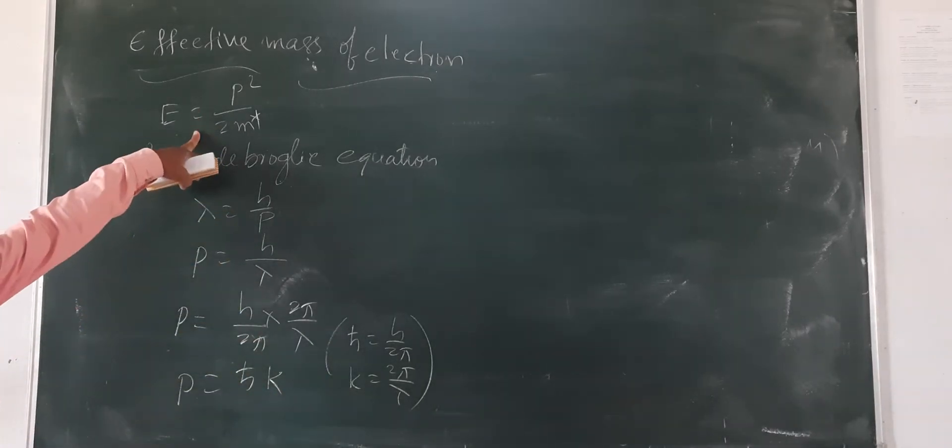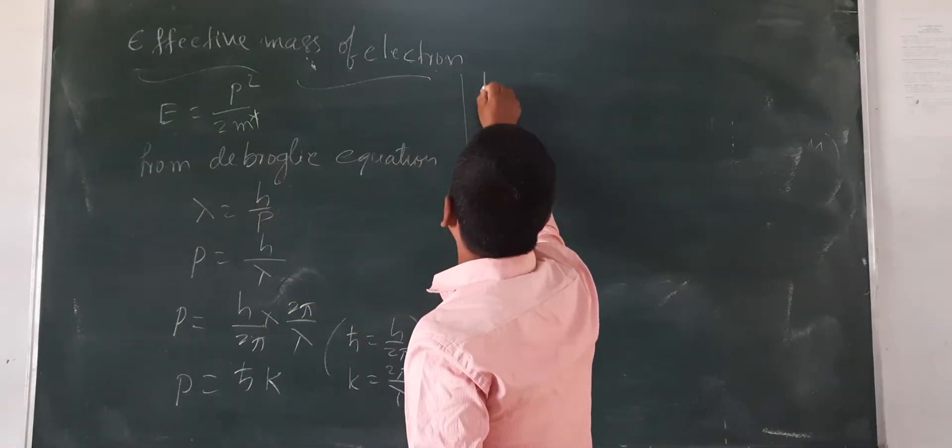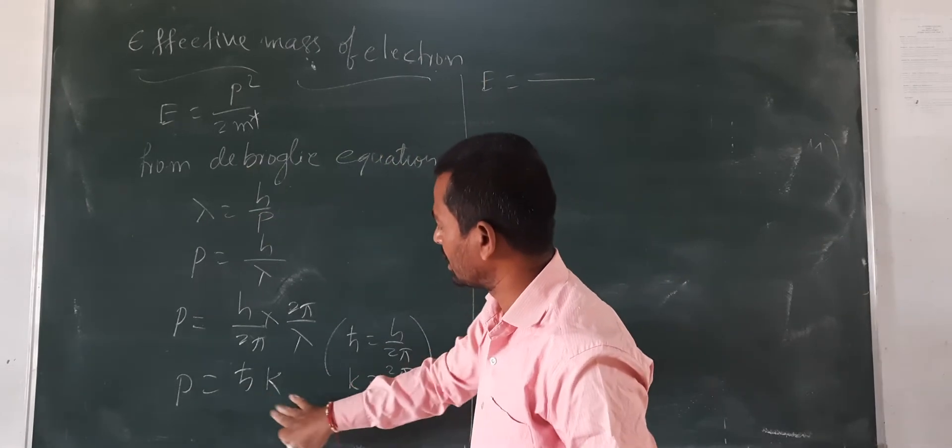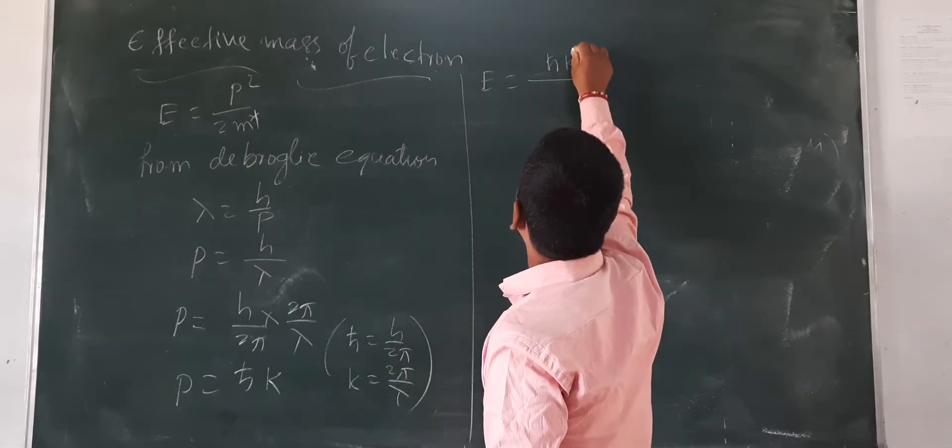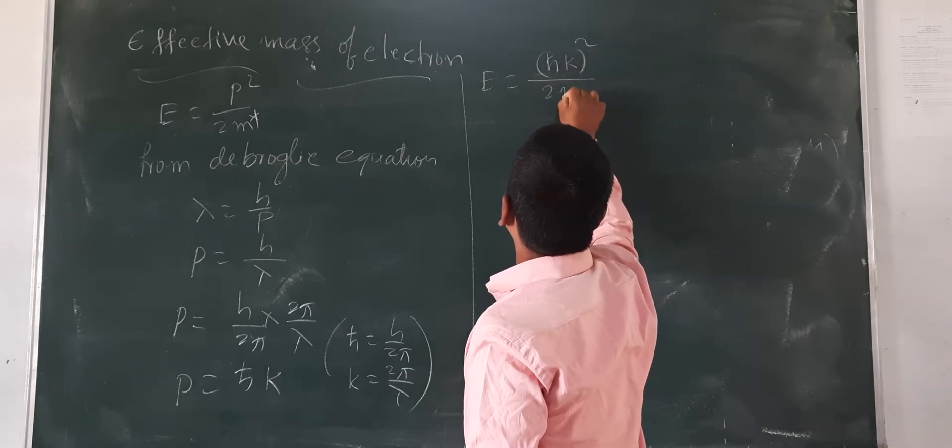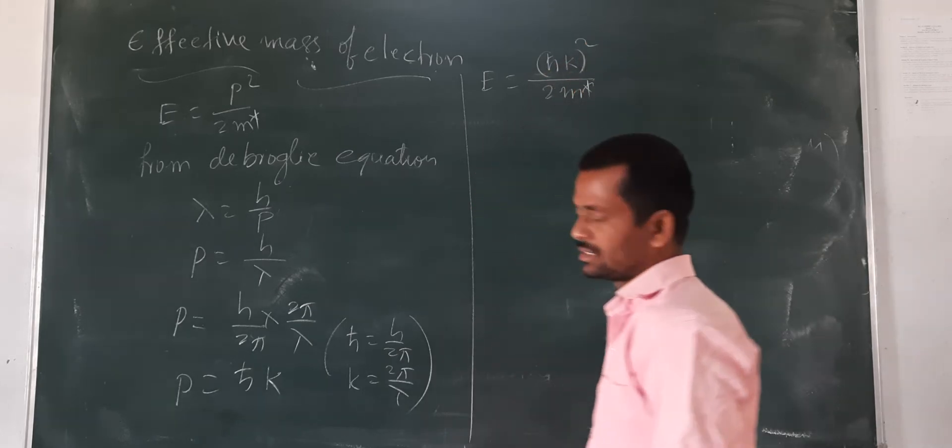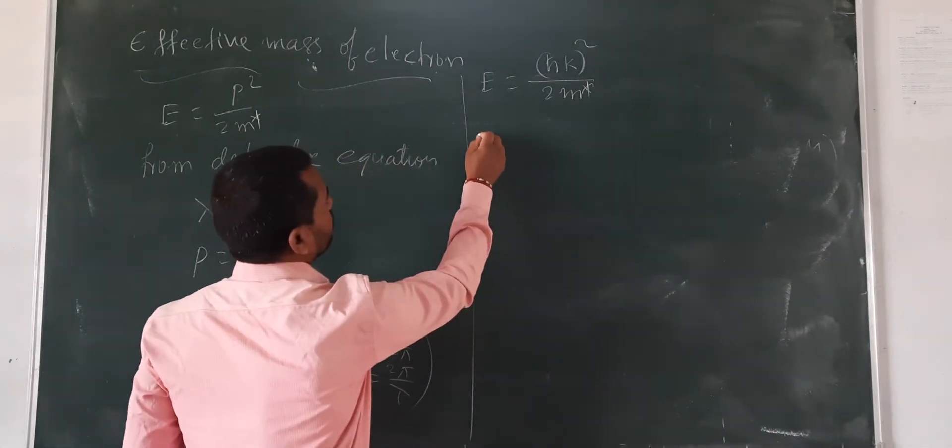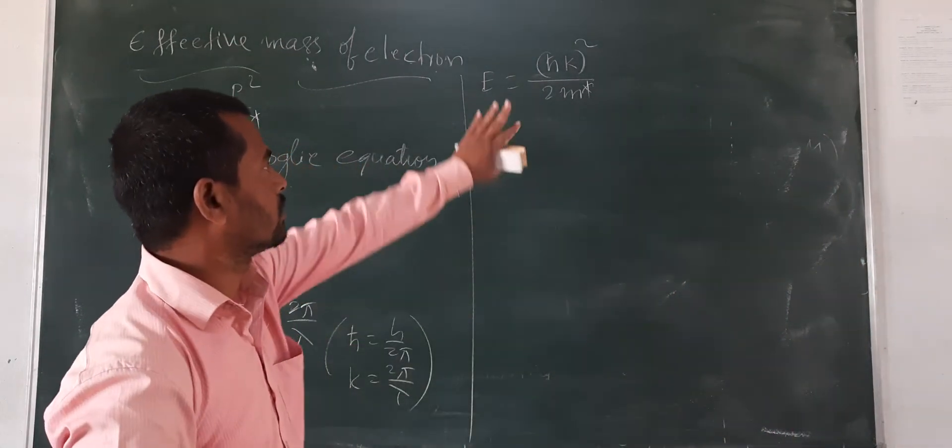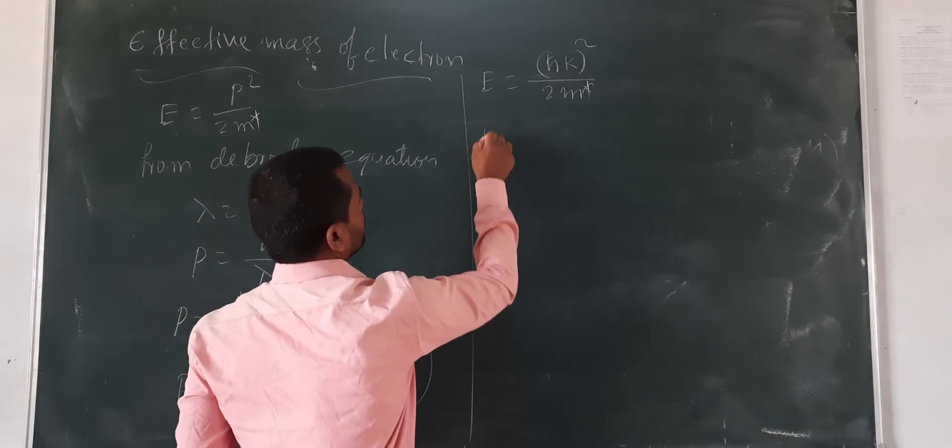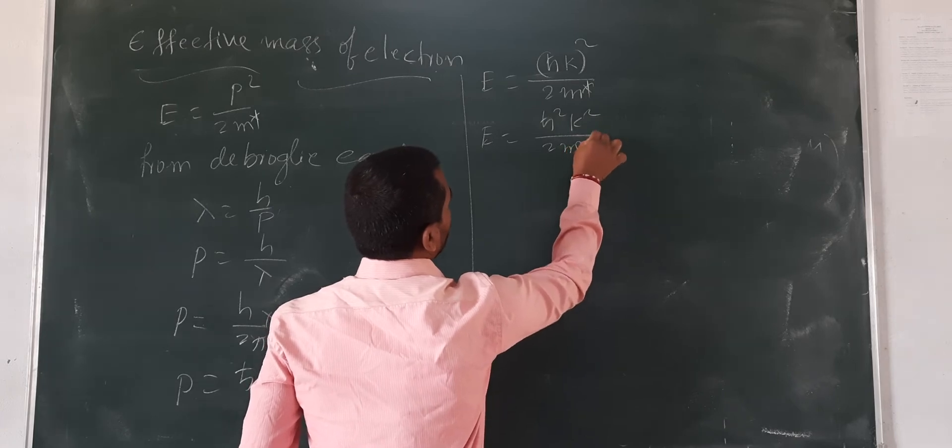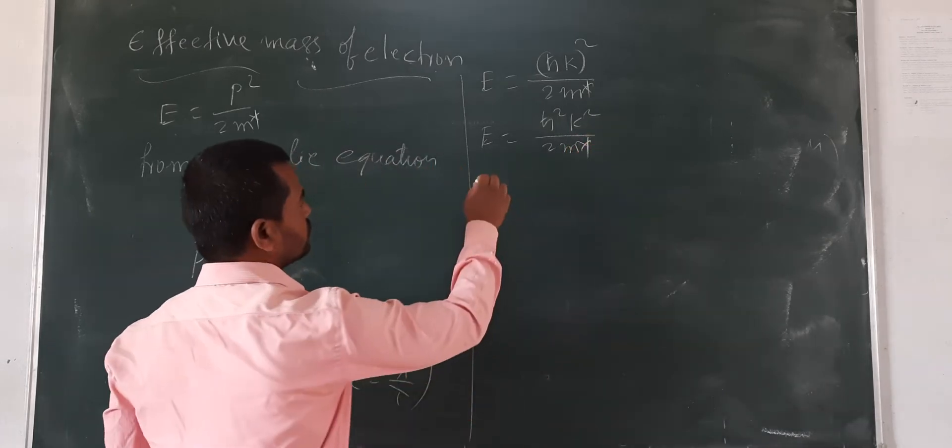I have substituted this equation in this equation. Then what we get? E equals, in the place of p squared, h-cut k squared by 2m. Either now what we have to write: E equals h-cut squared k squared by 2m.